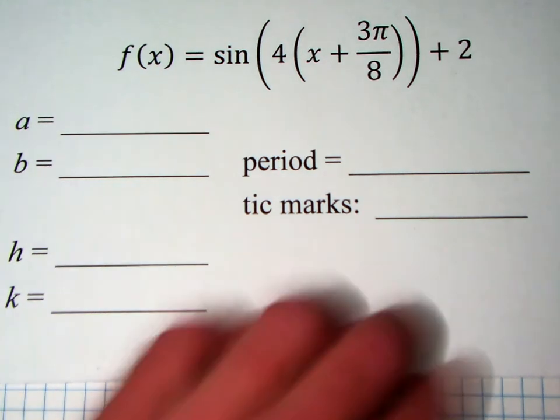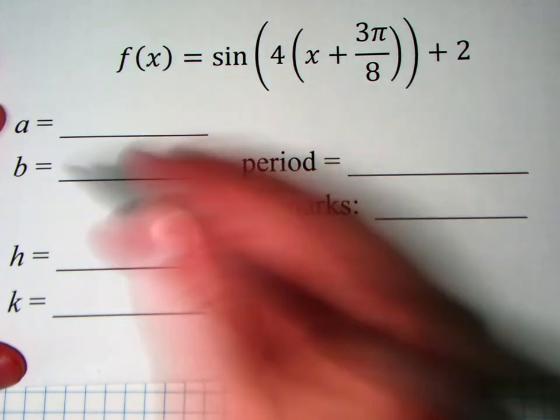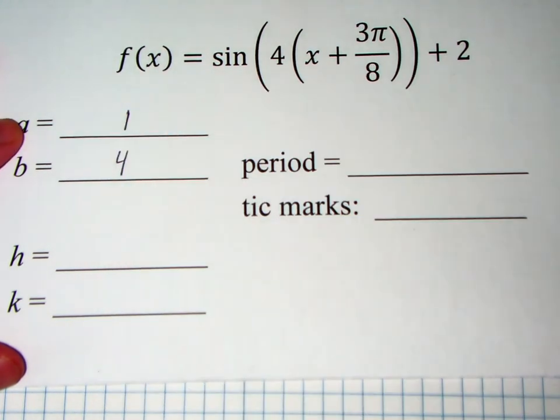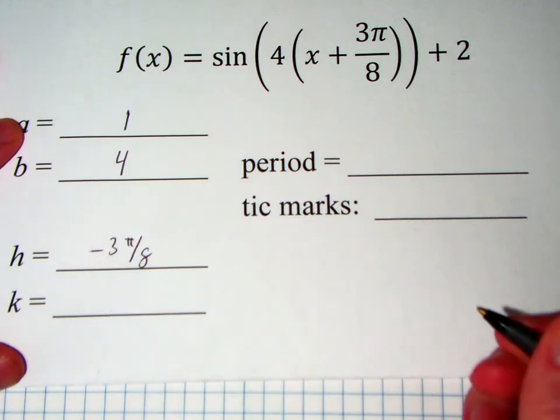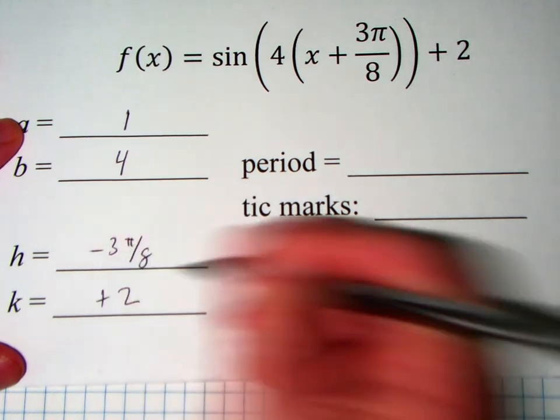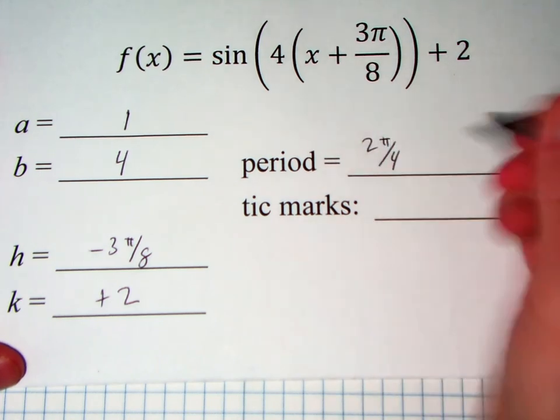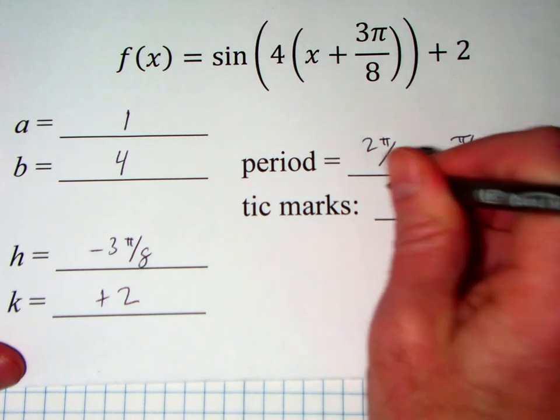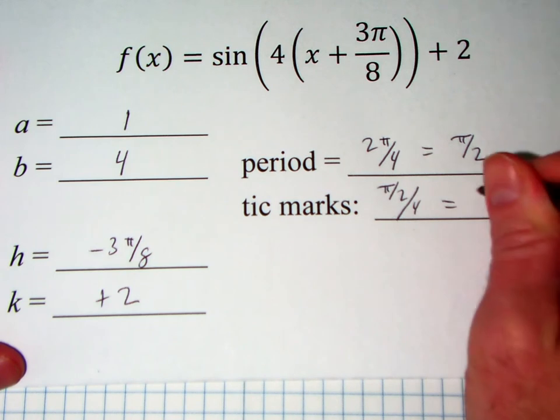Okay, so hopefully by now you have done your own graph and filled all those values in. So I'm going to go through this a little bit faster. So my a value here is just 1. My b value is 4. My h is negative 3 pi over 8, and my k is positive 2. Period: 2 pi over 4, which simplifies to pi over 2. And tick marks: pi over 2 divided by 4, which would be pi over 8.